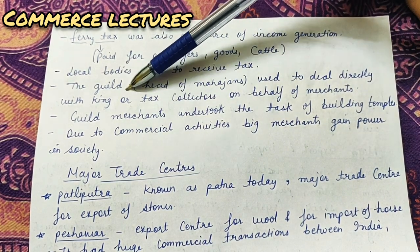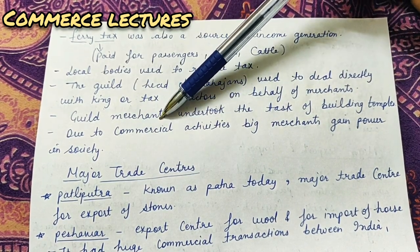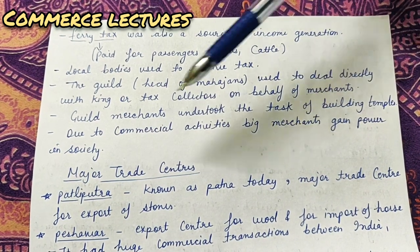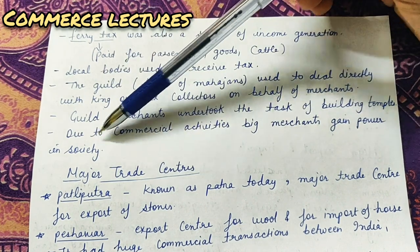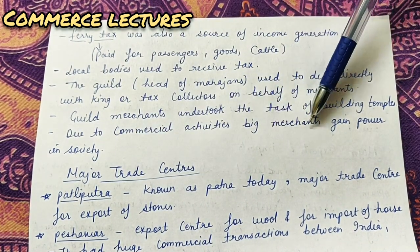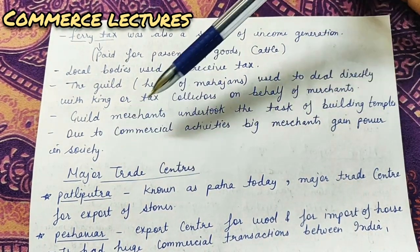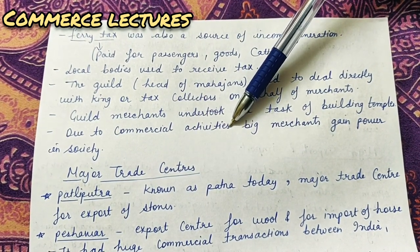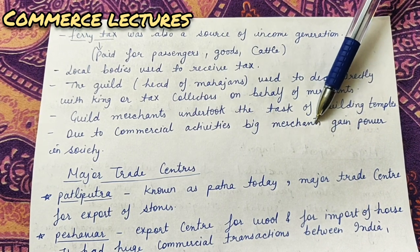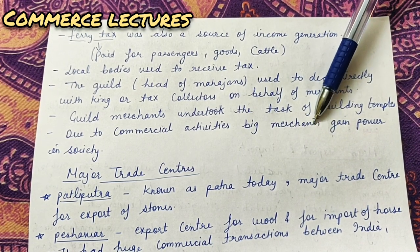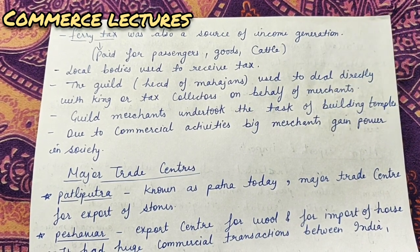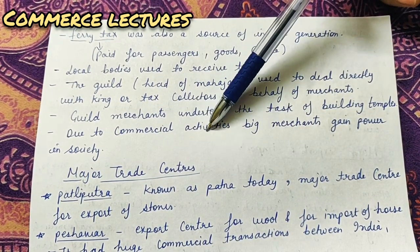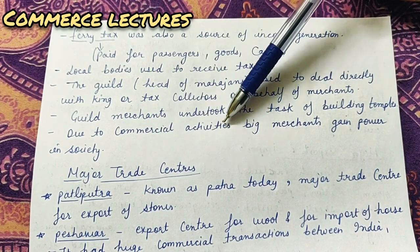Guild merchants undertook the task of building temples. If a temple had to be built, that work was given to these guild merchants. Due to commercial activities, big merchants gained power in society. Wherever commercial and trading activities took place, the big merchants - the big traders - held all the power, just like the Ambanis today. At that time, those who conducted commercial activities at large scale held power.